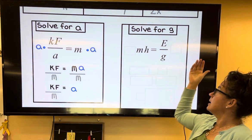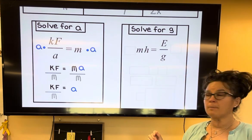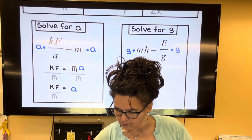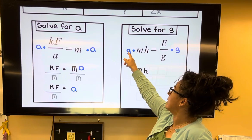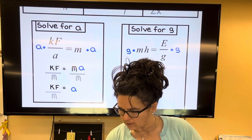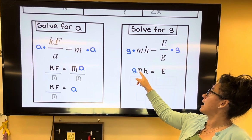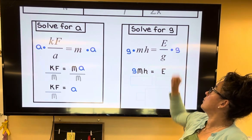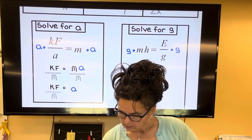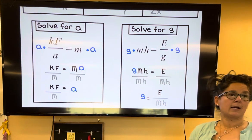Last example: I see an equation, it has a fraction, so I multiply both sides by the denominator. The denominator is g, so let's multiply by g. On the left-hand side, I now have g times m times h. These g's cancel, e is by itself, so it equals e. And then I would like to get rid of the m and the h, because I'm solving for g. So divide by m times h — what I do to one side, I do to the other — and I have g by itself.